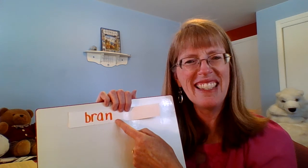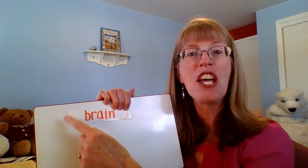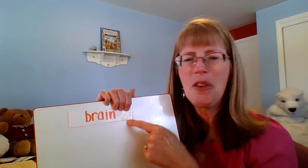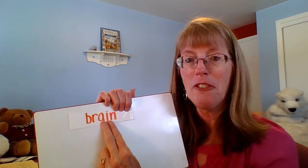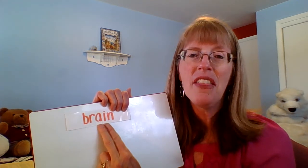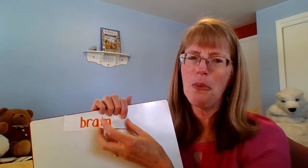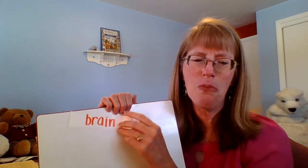Bran. Put the A-I together. A. Brain. Notice how I'm seeing the vowel first. It's a great way to decode a word. If I'm not sure what the word is, I look for the vowel. Think of what sound that vowel makes and then use that sound to read the word. From bran to brain. I've got a few more.